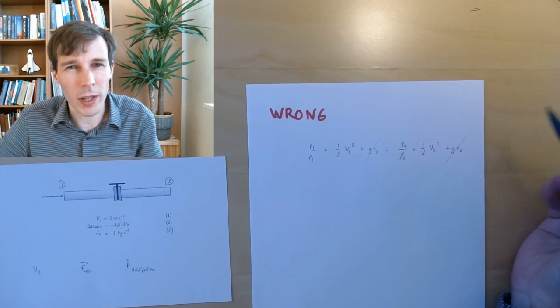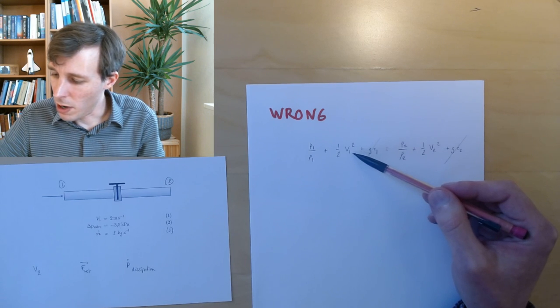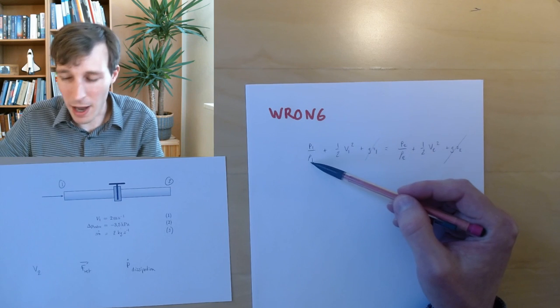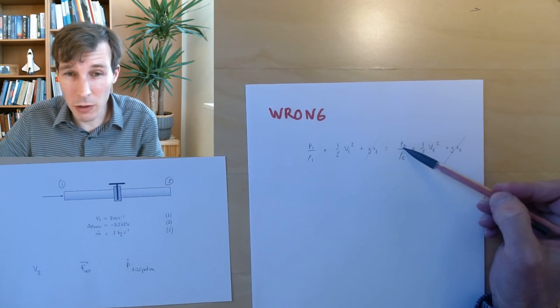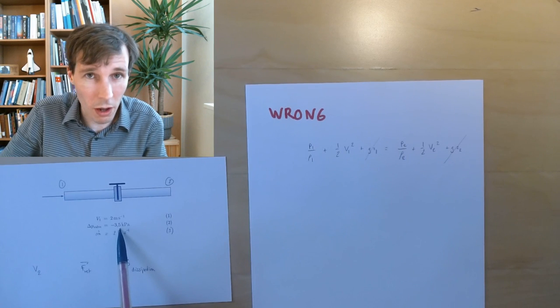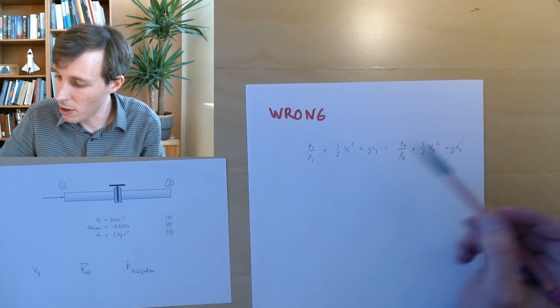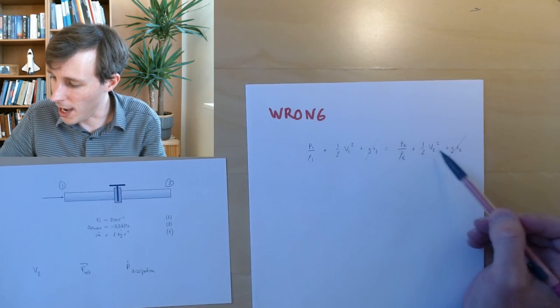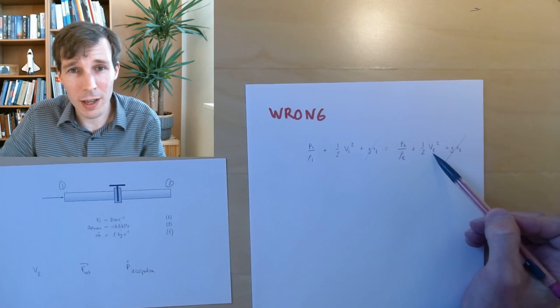I can look at what I have and what I don't have. V1 I know. P1 I don't really have, rho 1 I have. I don't know P1, I don't know P2, but I know P2 minus P1 because this is the pressure loss through the valve. So P2 minus P1 is minus 3 kilopascals. Rho 2 equals rho 1, the density of water is known. Here is V2, the velocity I'm looking for.